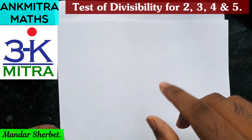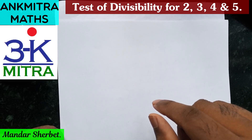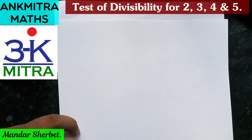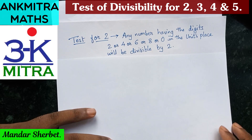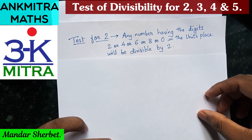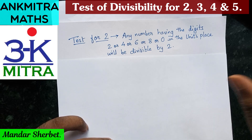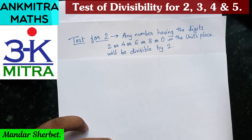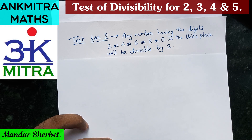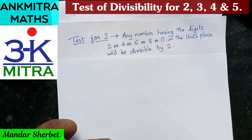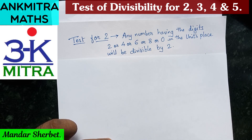Let's start with the first one — test for divisibility for 2. This is the easiest one. Any even number is exactly divisible by 2, because if we write down the table of 2, each and every even number is a multiple of 2. So any number having the digits 2, 4, 6, 8, or 0 in its units place will be divisible by 2. The units place is the first digit on the right in any integer — also called the ones place.